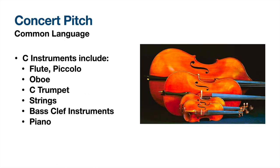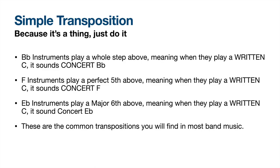Basically, you see a part and need a trumpet part covered but don't have a trumpet — you need to transpose. So we need what's called concert pitch. Concert pitch is a common language. When your director says 'concert D' or 'concert E-flat,' he's speaking to what the piano note is. When we say concert pitch we also mean C instruments — instruments that are in C, meaning if they play a C, it sounds the same as a C on the piano. The piano can play the same part as the flute and they will sound the same. Common C instruments include flutes, piccolos, oboes, C trumpet, all strings, and bass clef instruments.